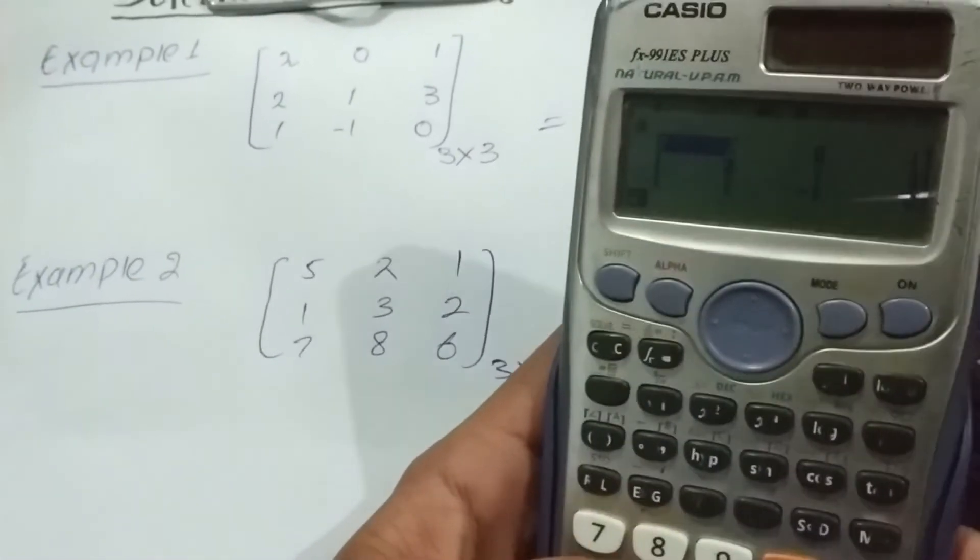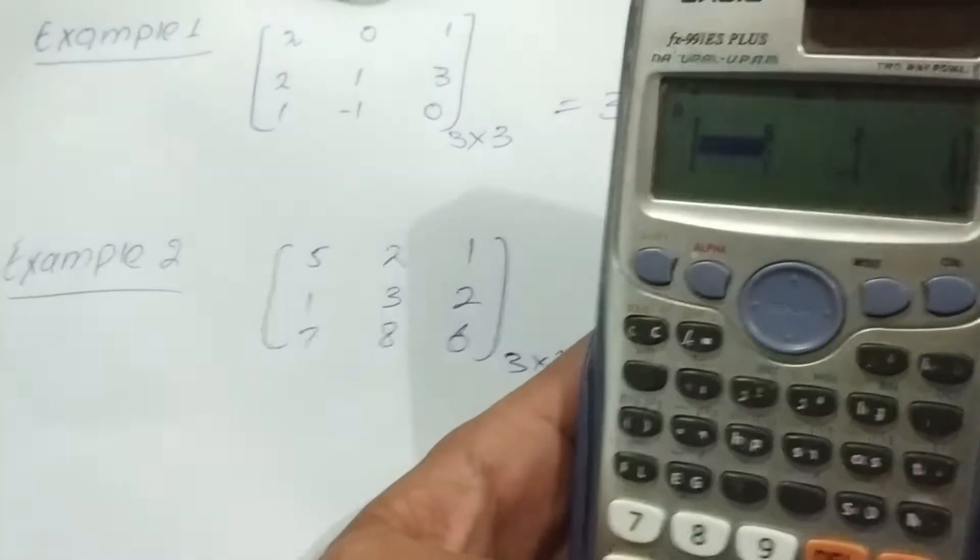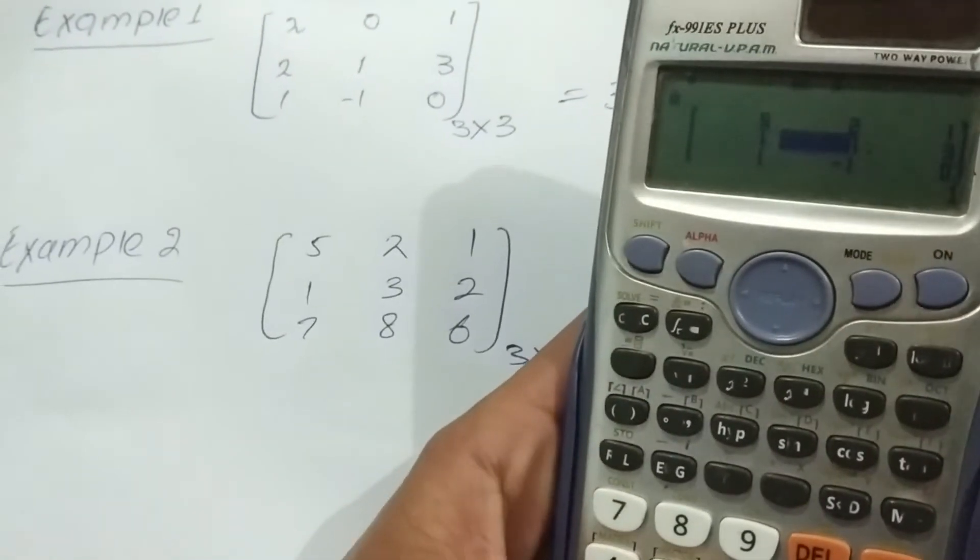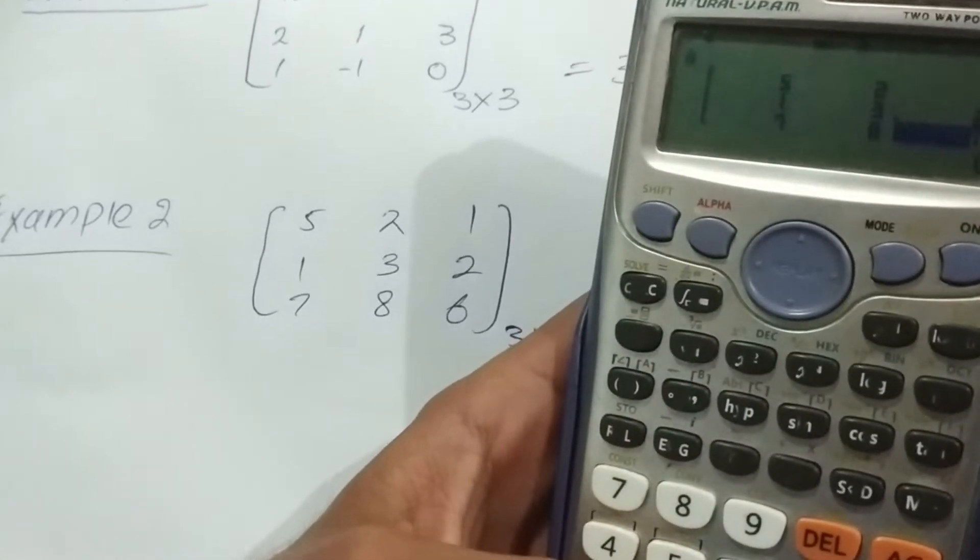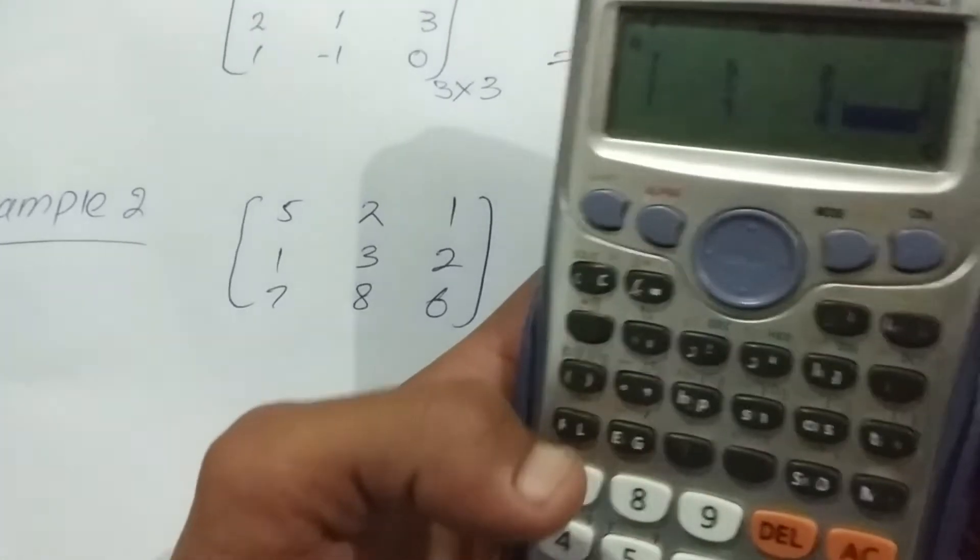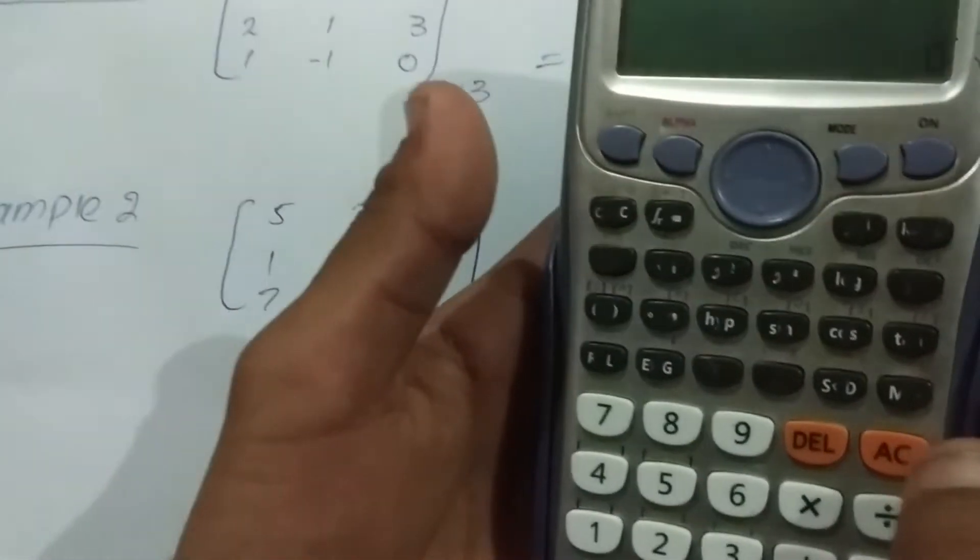5 equal to, 2 equal to, 1 equal to, 1, 3, 2, 7, 8 and 6. After putting entries press AC button, sorry AC button.